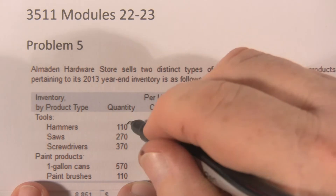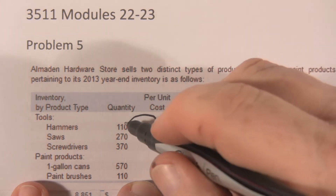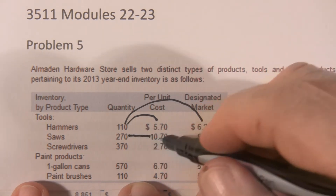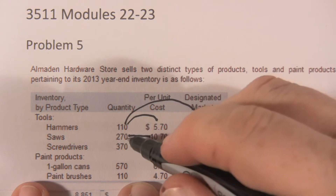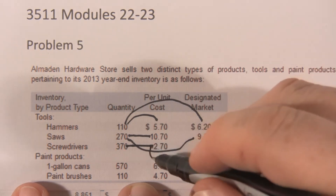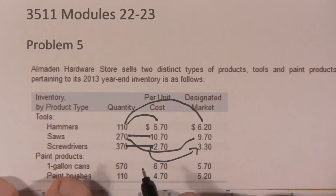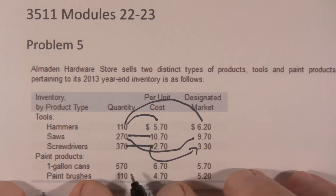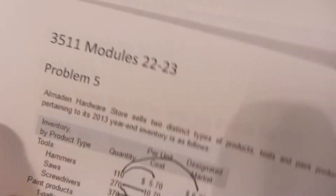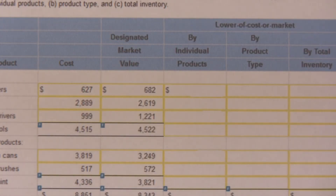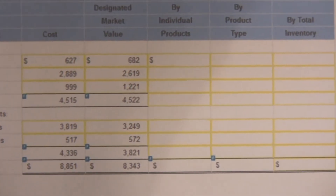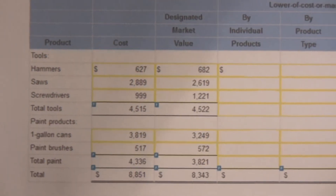So we're going to multiply 110 times 570, and we're going to multiply 110 times 520. We're going to do the same with 270 times 1070 and 270 times 970, and then 370 times 270 and 370. We're just going to multiply the quantity per unit cost and quantity per designated market cost. When we do that, we come up with that chart — all that is, is just those costs multiplied by the number of units.